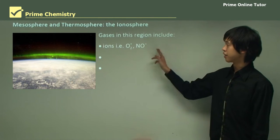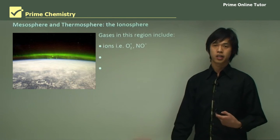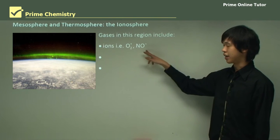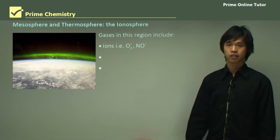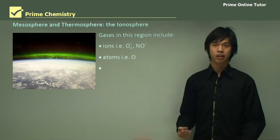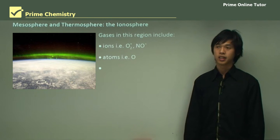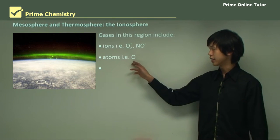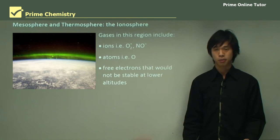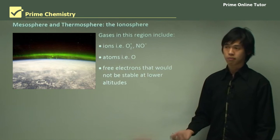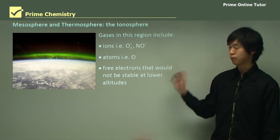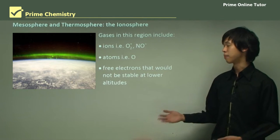The gases in the ionosphere include ions, because when the sun bombards the Earth's atmosphere with radiation it ionizes some of the gases, producing oxygen ions, nitrous oxide ions, and other ion types. There are also single free atoms, as radiation continues to break down gases present, as well as free electrons produced from the ionization process. At lower altitudes there would be too much in the way to allow these electrons to exist stably, but because there's so much space in these layers, they can be stable to a certain extent.